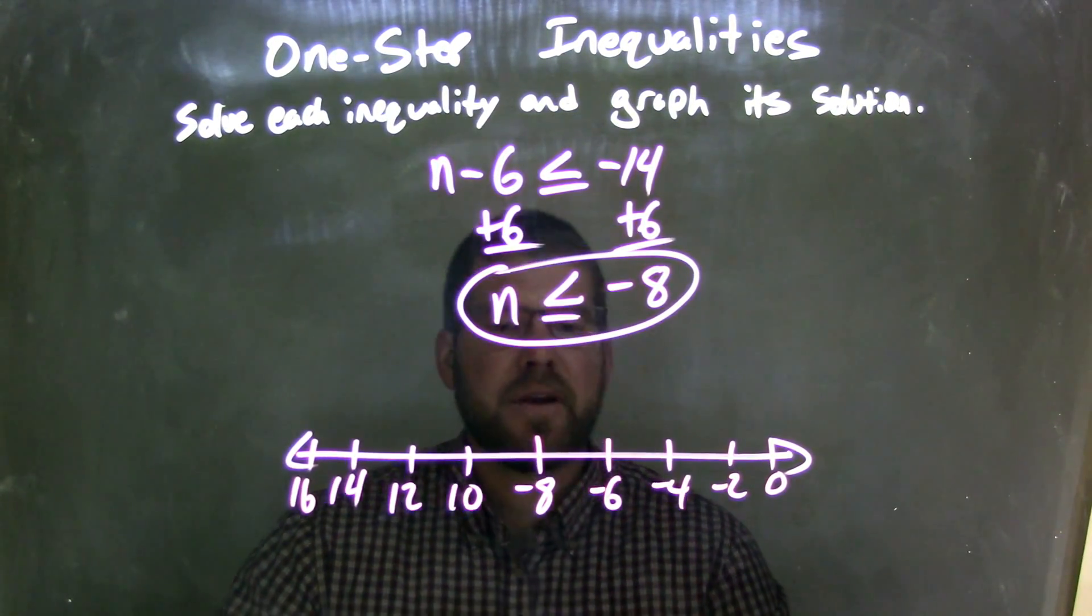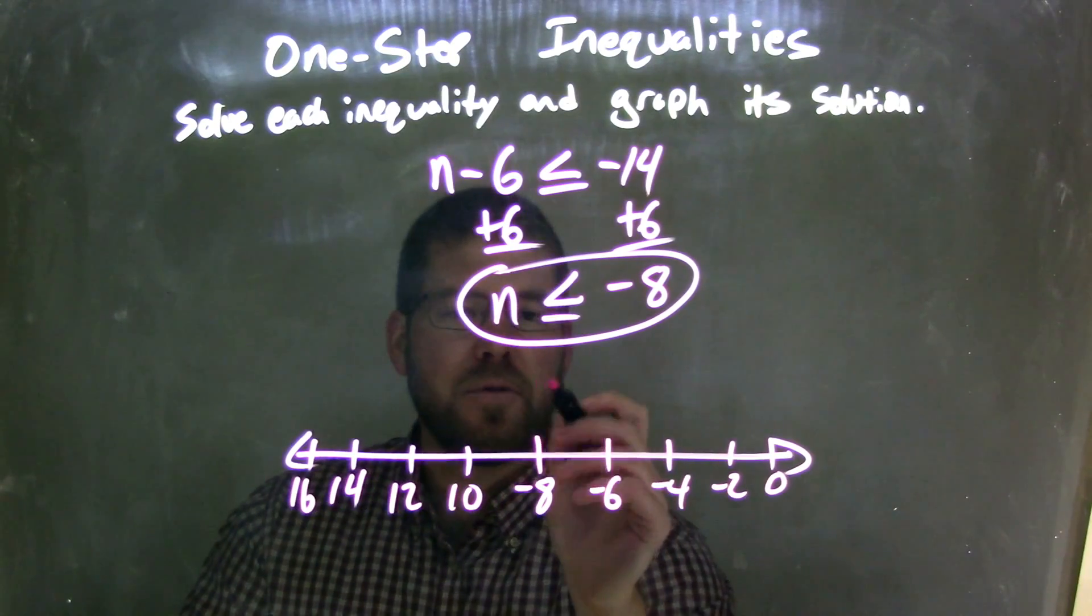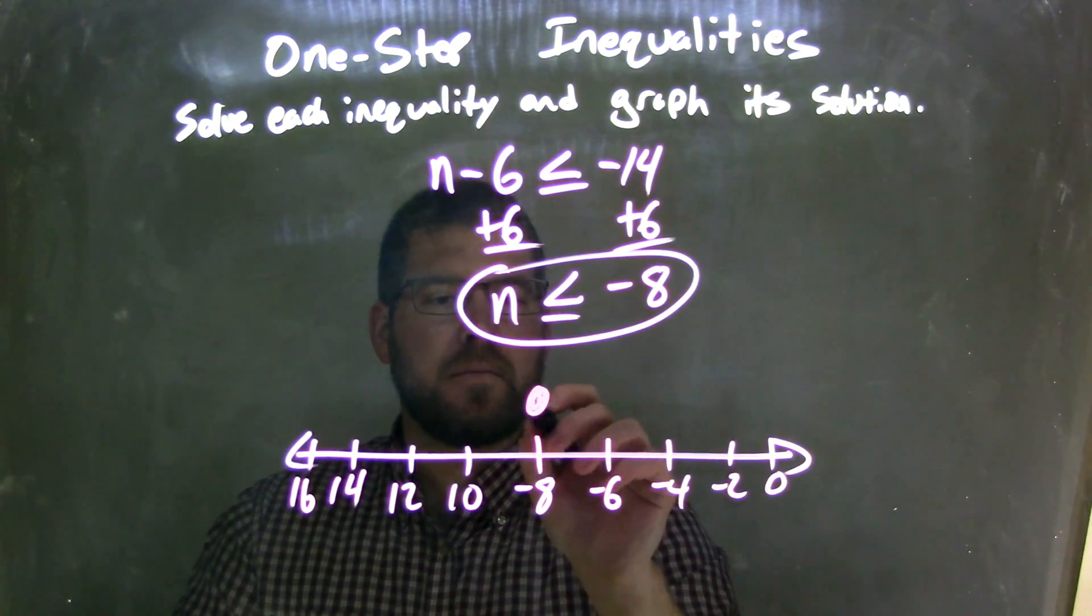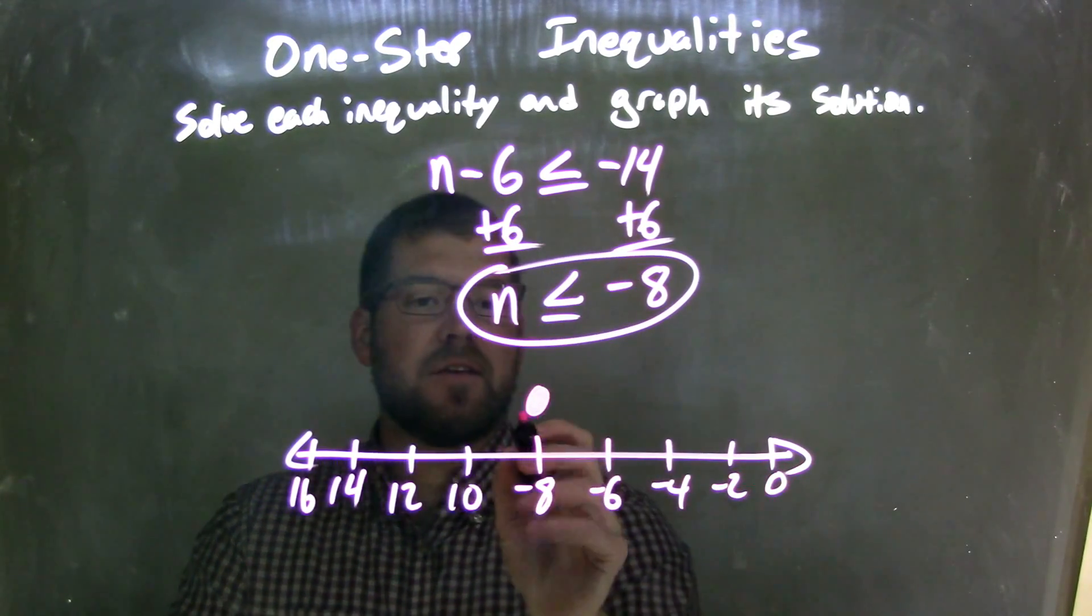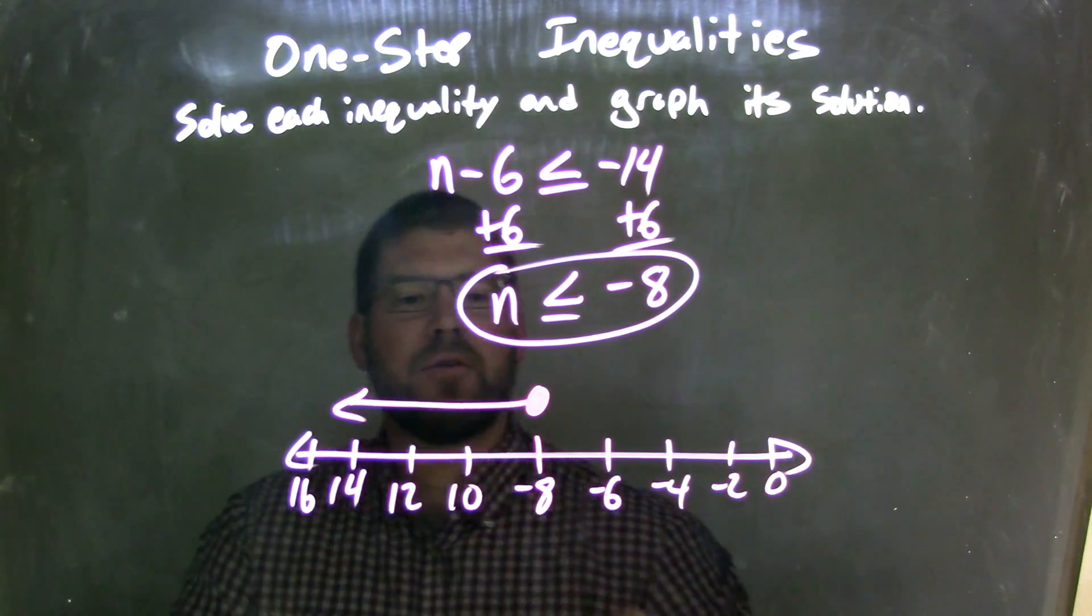So we said n is less than or equal to negative 8. At negative 8, I'm going to put a closed circle, and we need to shade to the left of it because it's less than. So my arrow is going to go to the left.